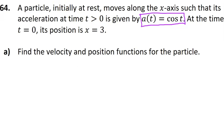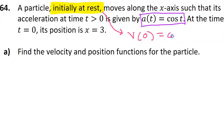Initially means that the time is at t equals 0, and at rest means that the velocity is 0. So this is an indirect way of saying the velocity at 0 is equal to 0 — just another initial condition you need to be aware of. They gave us the acceleration function, so let's start by writing that down: the acceleration at t is equal to cosine t.